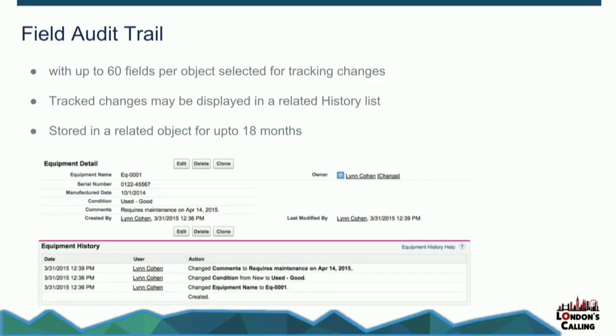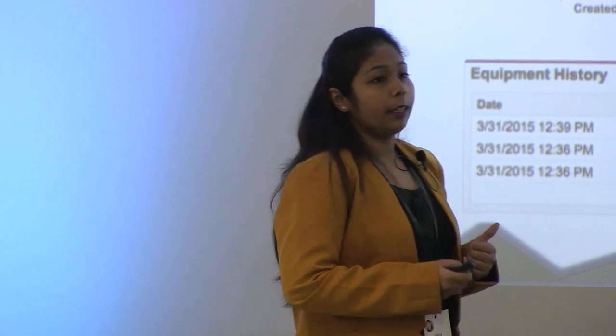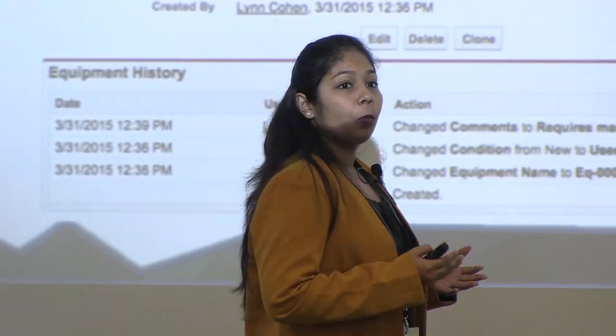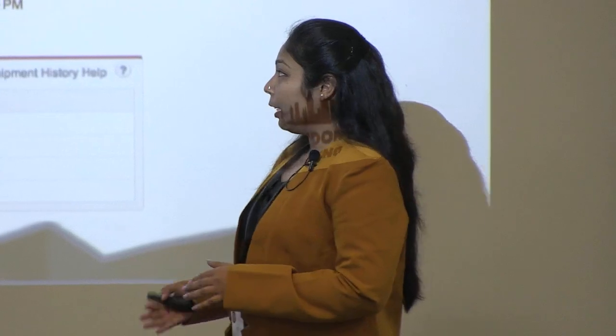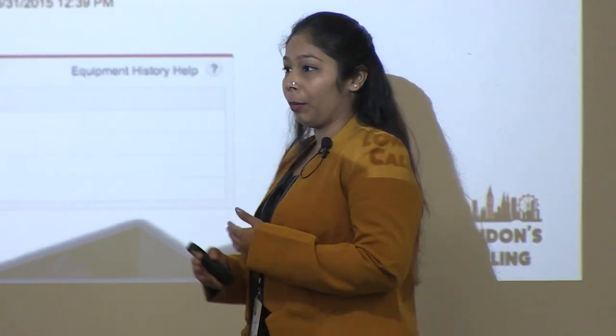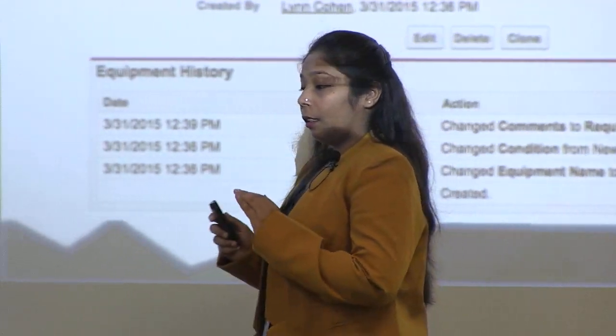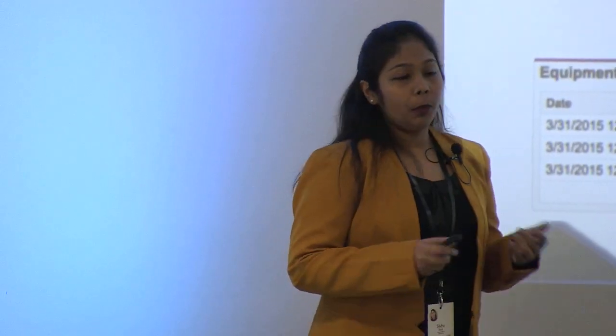The next thing is field audit trail. Field audit trail is kind of a time machine — it takes us back in time and allows us to see the state and value of data at that particular point in time. Up to 60 fields per object can be tracked, and historical data is stored for up to 18 months in Salesforce, after which it gets deleted. Any historical data captured before platform encryption was enabled is still in readable state — it is not encrypted. Any data created or updated prior to enabling platform encryption is still in readable mode. If you want to get it encrypted, you need to reach out to Salesforce for that.